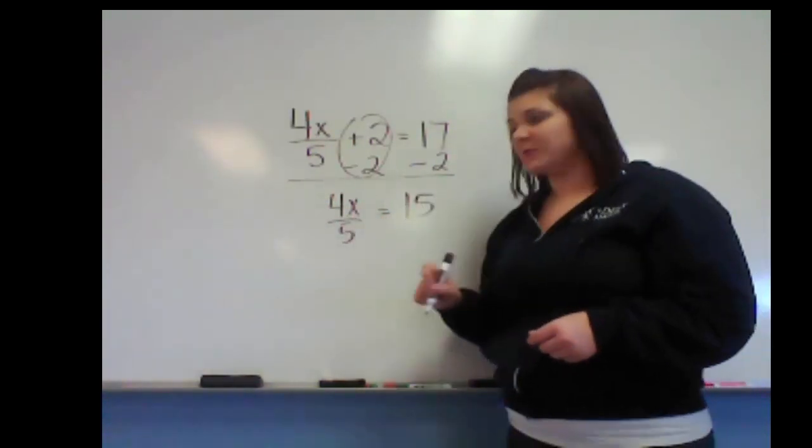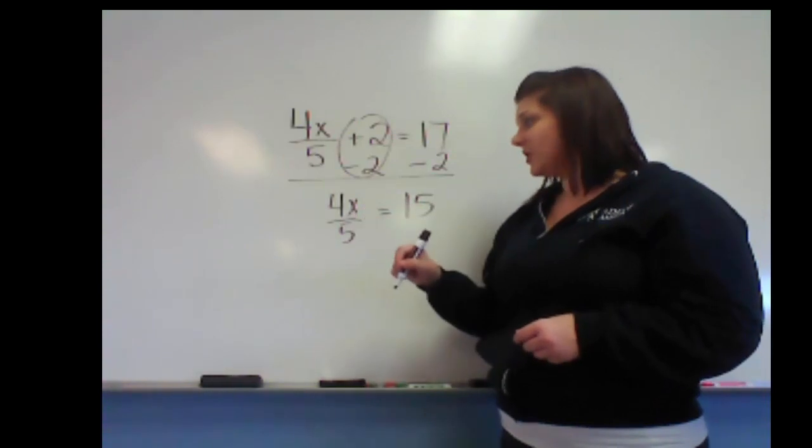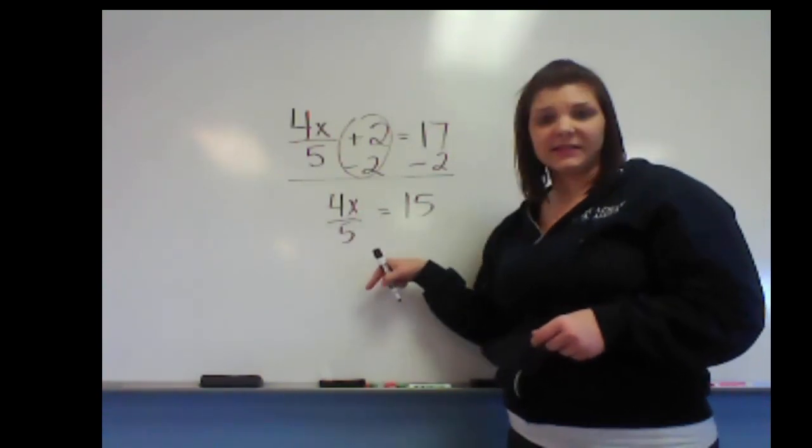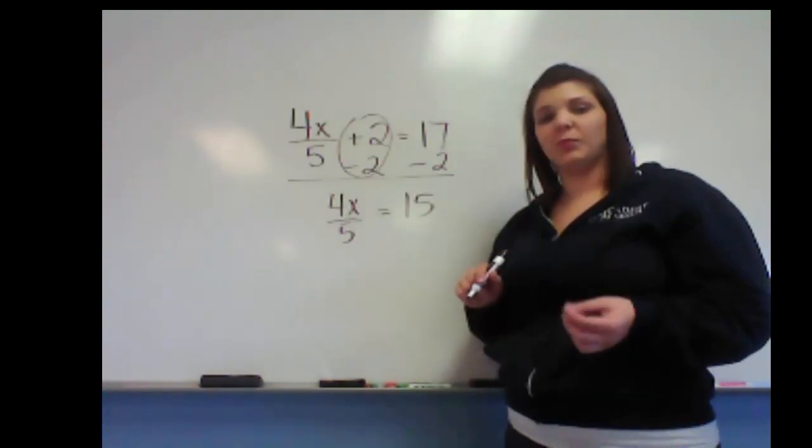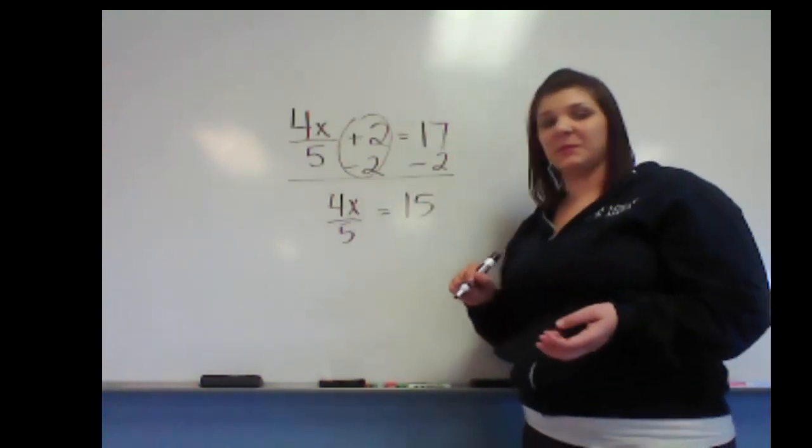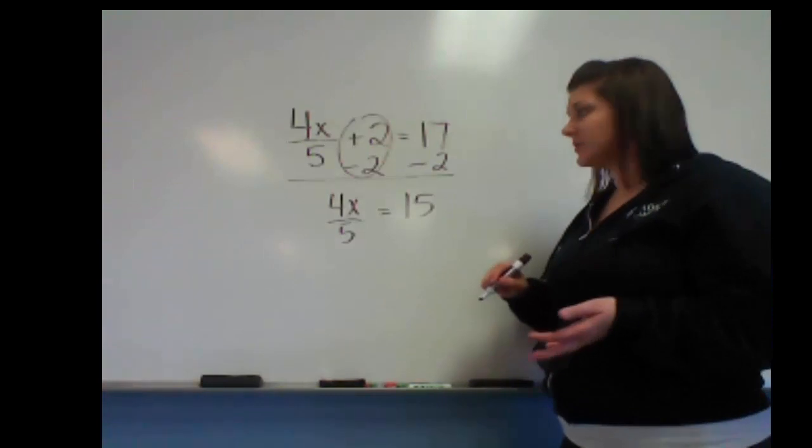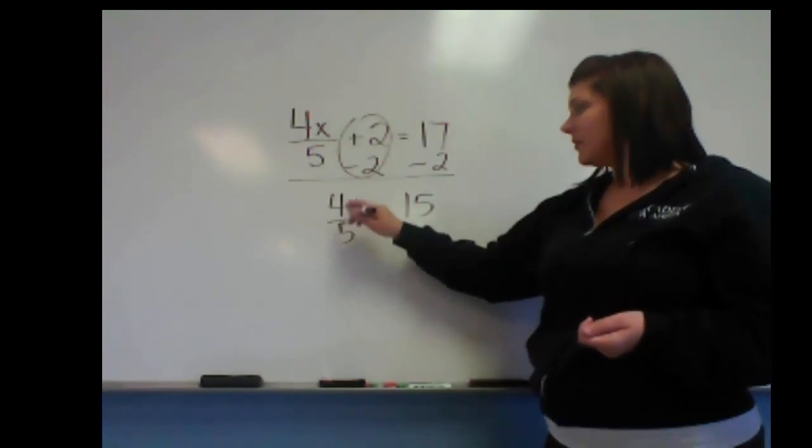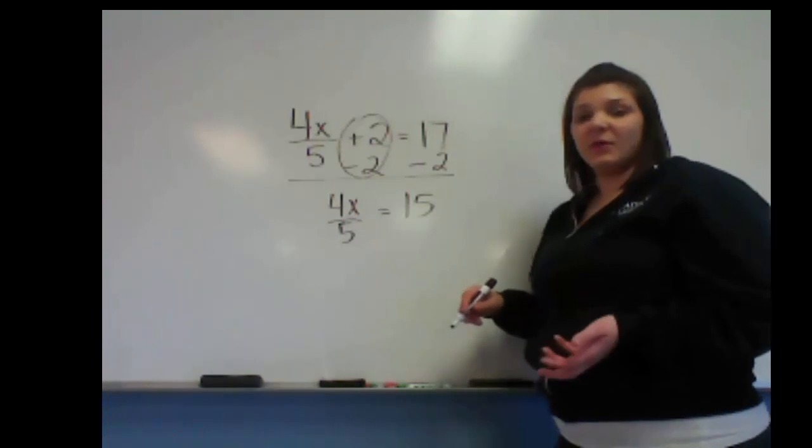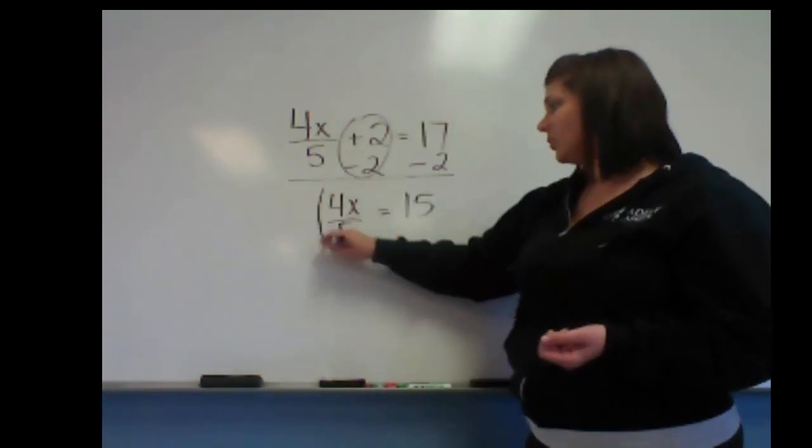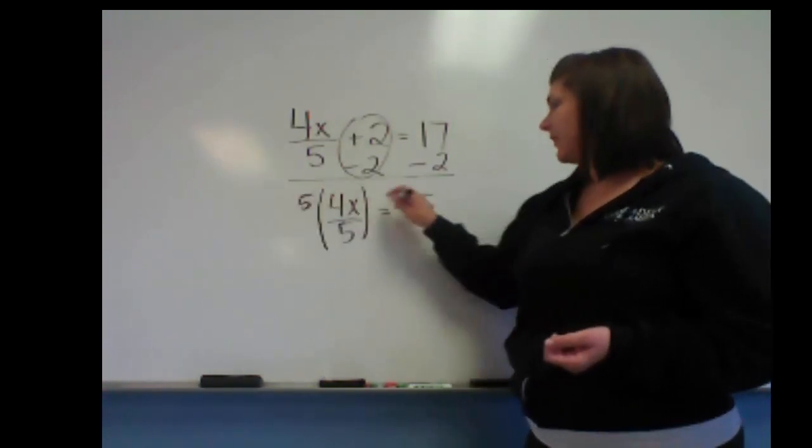Now let's not get too confused with this. This really is just 4 fifths x. Essentially, when we're looking at fractions, we want to eliminate the fractions. That means we want to get rid of the denominators. When we know that 4x is being divided by 5, our denominator is 5. We have no other denominators, so we can just multiply both sides by 5.